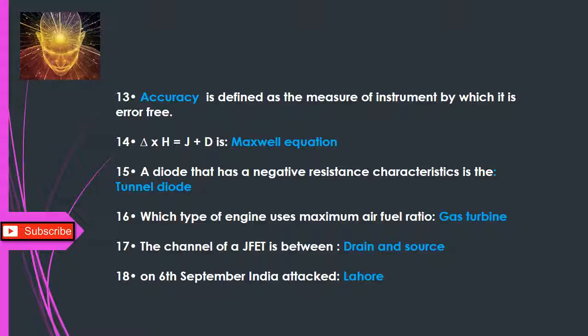Q16: Which type of engine uses the maximum air-fuel ratio? — Gas turbine. Q17: The channel of a JFET is between — drain and source. Q18: On September 6th, India attacked — Lahore.